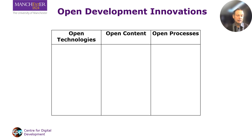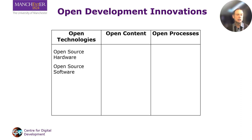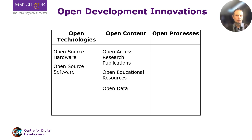Now looking at the horizontal dimension. Examples of open technologies include open source hardware and software, one main advantage of which is that you can reuse prior work and don't have to redesign from scratch. Examples of open content include open educational resources, which means putting teaching resources online and in the public domain so anyone can use them, and open access research publications. By making these resources available for free online, this helps reduce costs for teachers and researchers in the global south and helps a little to level an unequal playing field.